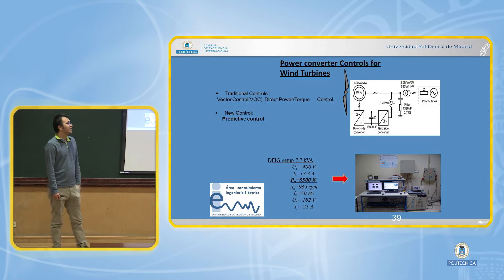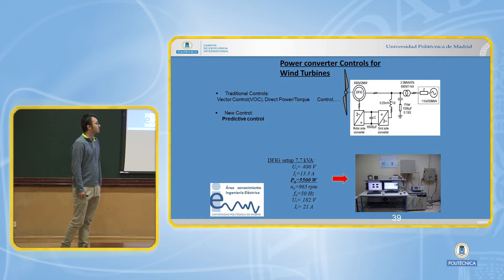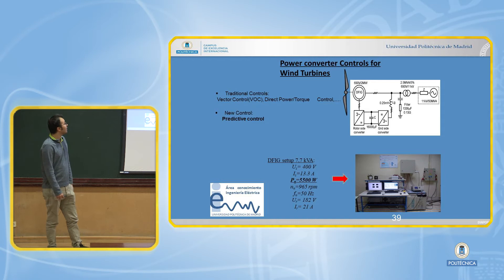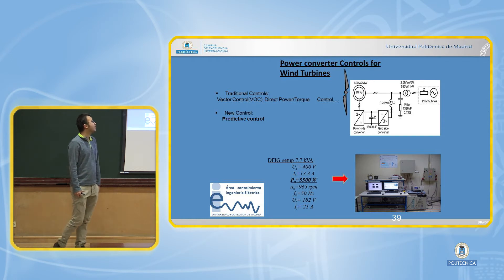Moreover, it needs to tune the PI controllers, and in weak grids the performance is not so good. But direct power control has a very fast dynamic response, but the switching frequency is variable and the ripple of the power are great.